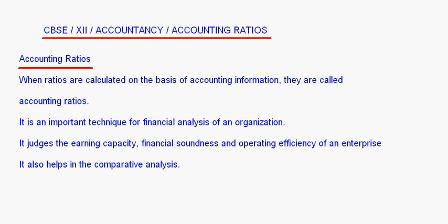Today we are going to learn about accounting ratios. Accounting ratios are ratios calculated on the basis of your accounting information — whatever information you have in your trading profit and loss account or your balance sheet. If we compute some ratios based on that information, it is called accounting ratios. The main purpose of these accounting ratios is to help us analyze the financial position of the company.